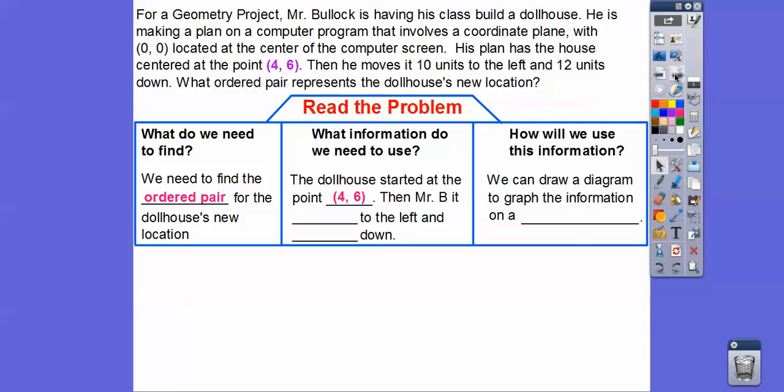And then Mr. Bullock, he moved it 10 units to the left and then 12 units down. So 10 units to the left and 12 units down. So we can draw a diagram to graph the information on a coordinate plane. We're going to do the x and y axes here.